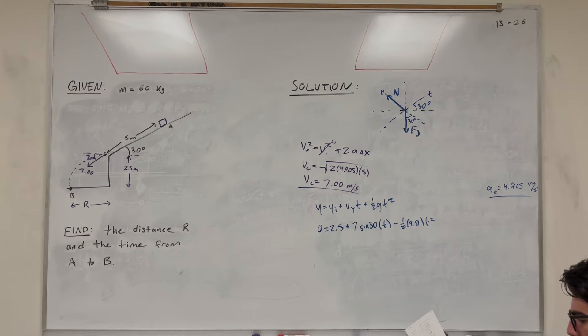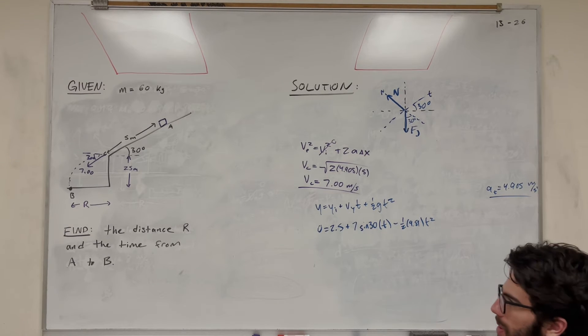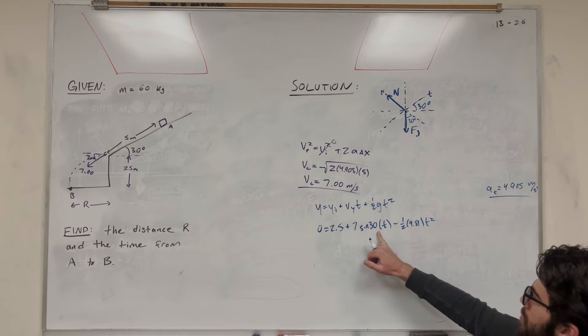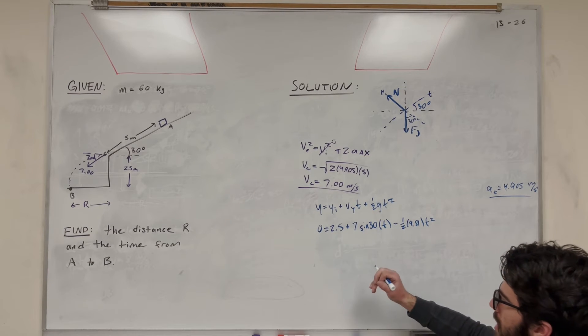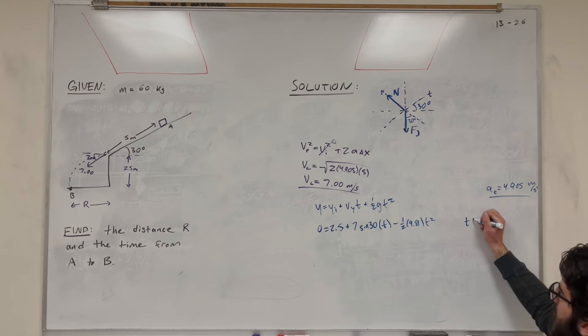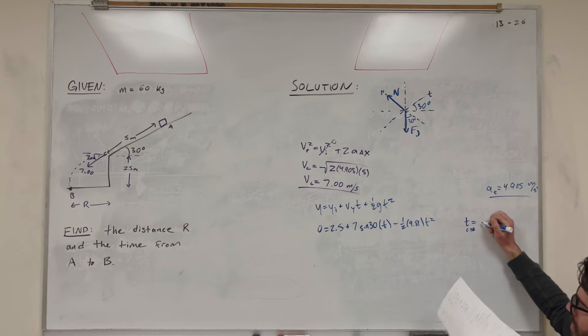So of course we got our quadratic formula we're going to use here. We got A, B, and C. So if you plug that into the quadratic equation, you're going to find that that time from C to B is equal to 0.441 seconds.